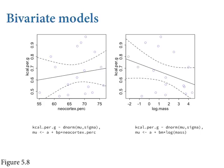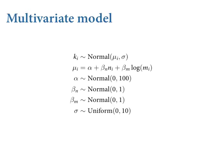Here's the multivariate model: K_i is kilocalories per gram of milk, N_i is neocortex percent, and log(m_i) is the log of mother's mass in kilograms. We use relatively flat priors and weakly regularizing priors on the beta coefficients. Next week we'll talk more about those priors and why we use them. They have very little effect, even in a dataset as small as this one.